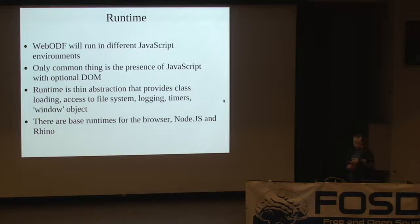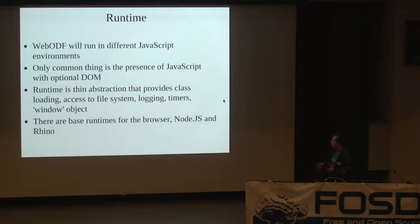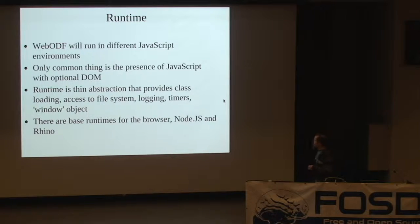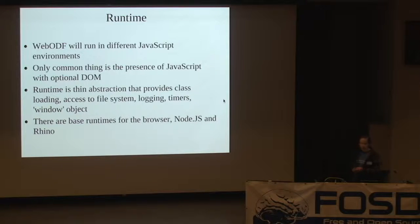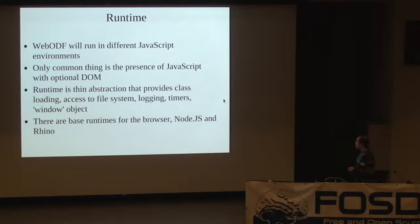WebODF runs in different runtimes and the only common thing between all runtimes is that they're all JavaScript and some may have a DOM. If they don't have a DOM you can't render, but you can still do unzipping or base64 encoding. The runtime is a thin abstraction layer that gives you access to the file system, logging, timers, and the window object. We currently have runtimes for the browser, Node.js — which is currently running this presentation — and Rhino, a JavaScript implementation.